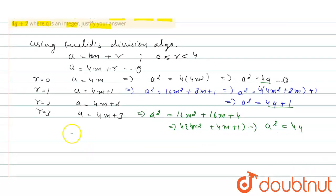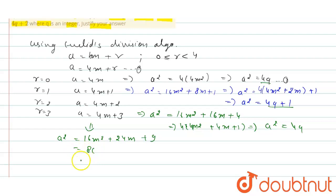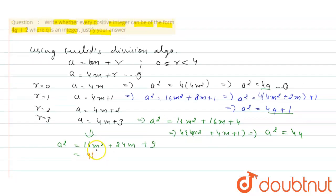So right now we don't find any new form. Now if we square A equals 4m plus 3, we get a² equals 16m² plus 24m plus 9. Taking 4 as common, we get 4(4m² plus 6m plus 2) plus 1, so we finally get the form a² equals 4q plus 1.